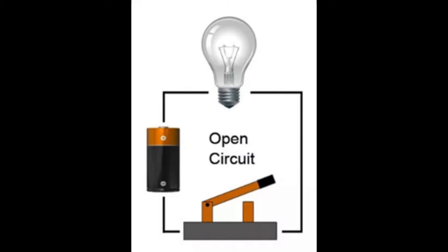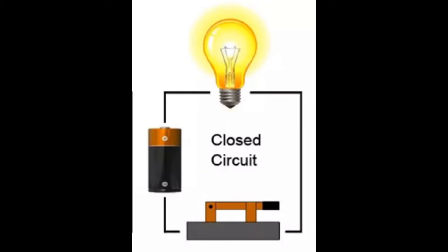When the switch is closed, those electrons do have a complete path and the circuit is complete, and the appliance will work. So today we are actually going to build a simple switch that's going to allow you to turn that light bulb that we used in our activity last week on or off.